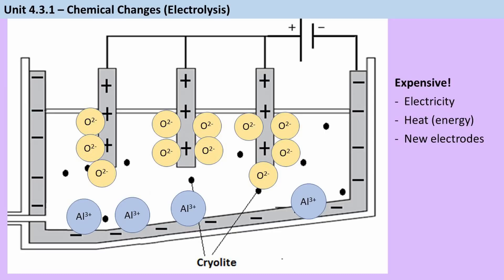So this process is quite expensive because it needs a lot of electricity, it needs a lot of heat energy to melt the aluminium oxide, and also you have to keep replacing the electrodes because they keep wearing away.